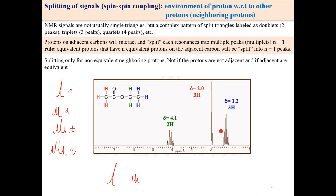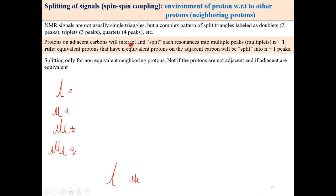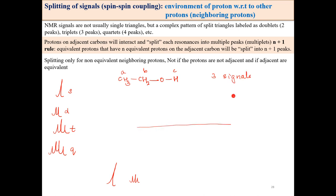Splitting tells you about the environment of the proton with respect to its neighbors. In simple words, it tells you information about the neighboring proton. Protons on adjacent carbon atoms interact and they split. Let's take the example of ethanol: three types of protons A, B, and C, so three signals expected. We were expecting three simple signals — for OH, CH2, and CH3 — but the actual NMR spectrum shows splitting.